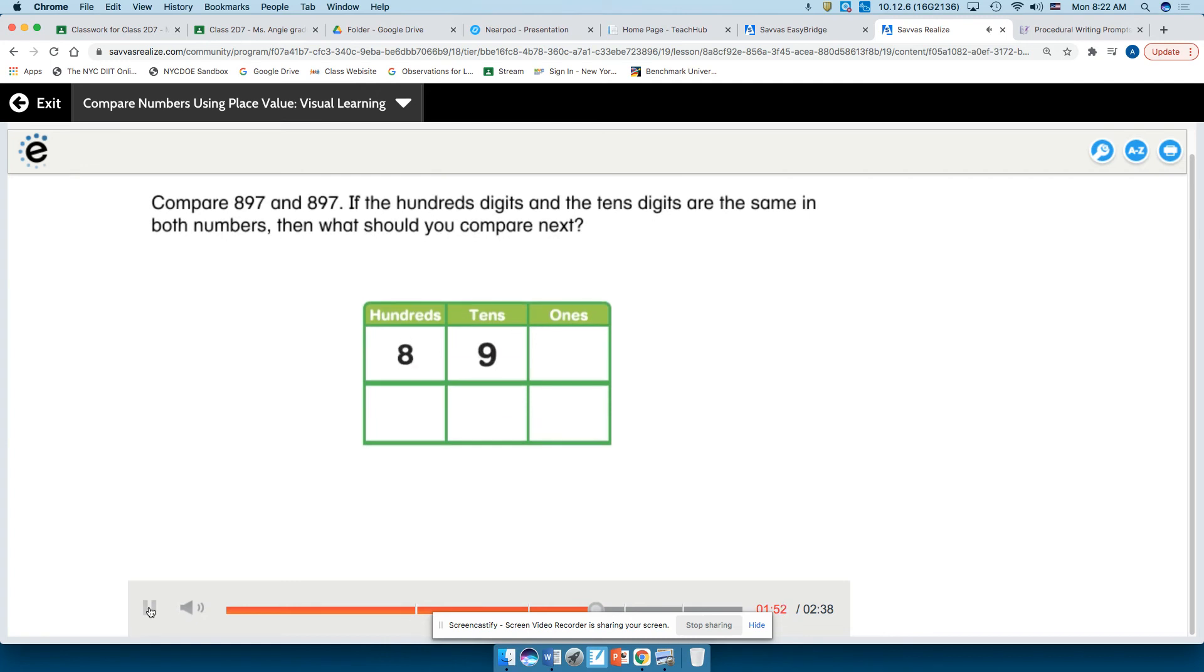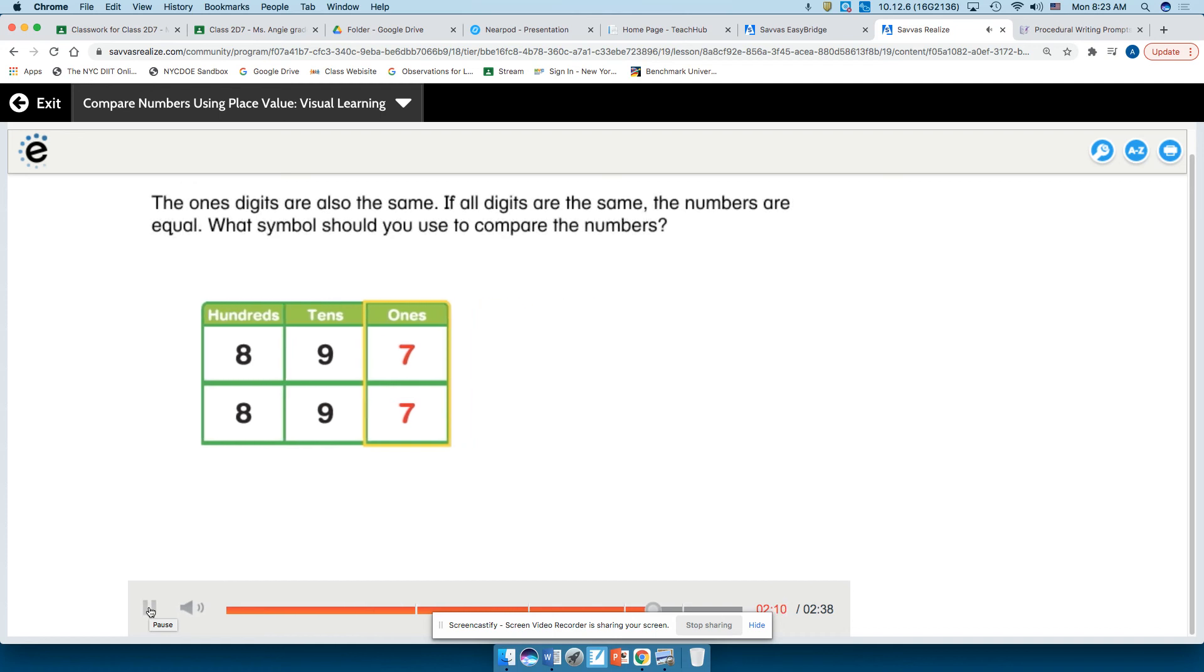Compare 897 and 897. If the hundreds digits and the tens digits are the same in both numbers, then what should you compare next? The ones digits. What do you notice about the ones digits? The ones digits are also the same. If all digits are the same, the numbers are equal.